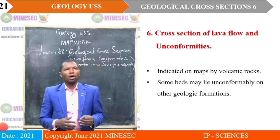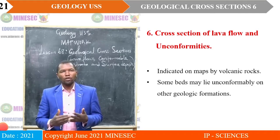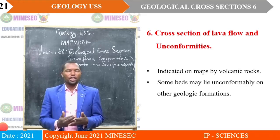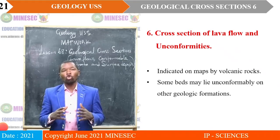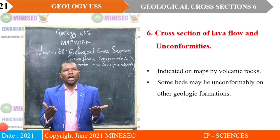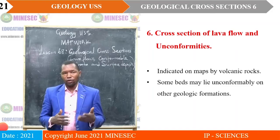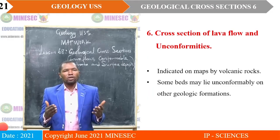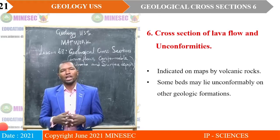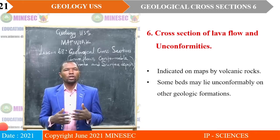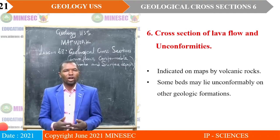Lava flows are indicated on maps by volcanic rocks. If you see basalt, rhyolite, obsidian, pitchstone, scoria, pumice, andesites, or trachytes — those are all indications of lava flows. All volcanic rocks on maps indicate lava flows. Extrusive features can also be indicated by the presence of pyroclastic materials — indicating igneous activity occurring on the surface.